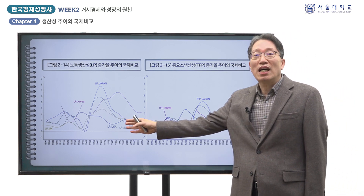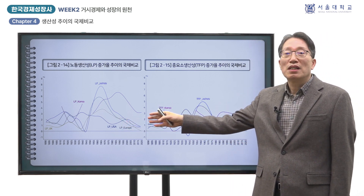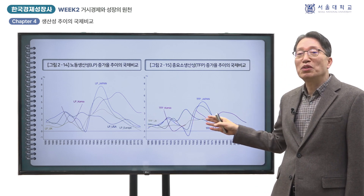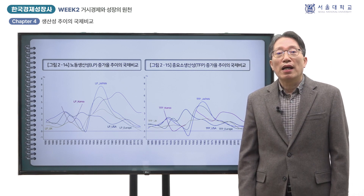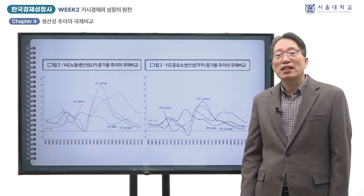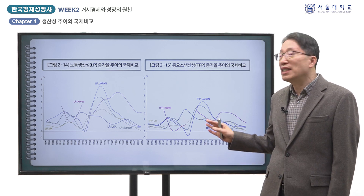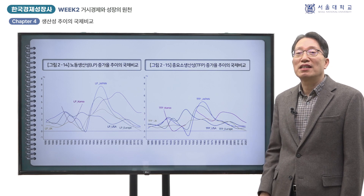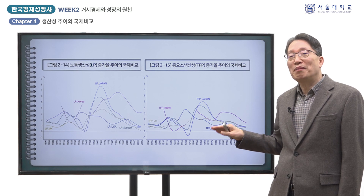먼저 LP의 증가율 수준이 TFP 증가율보다 더 높게 나옵니다. 그것은 LP에는 TFP 이외에 자본심화 효과가 더해졌기 때문입니다. LP와 TFP 증가율 추세를 비교해 보면 한국 이외의 나라는 대체로 유사하였지만, 한국의 경우 특히 고도성장기에 LP와 TFP 증가율의 양상이 다르게 나타난 것은 이 시기에 자본심화 효과가 매우 크게 변했기 때문입니다.